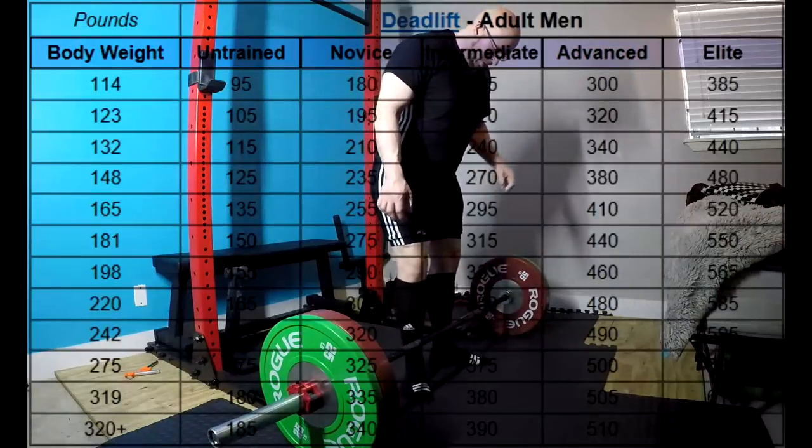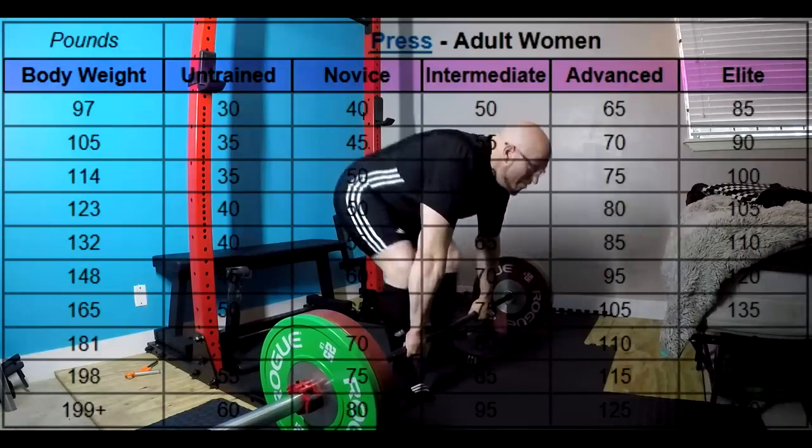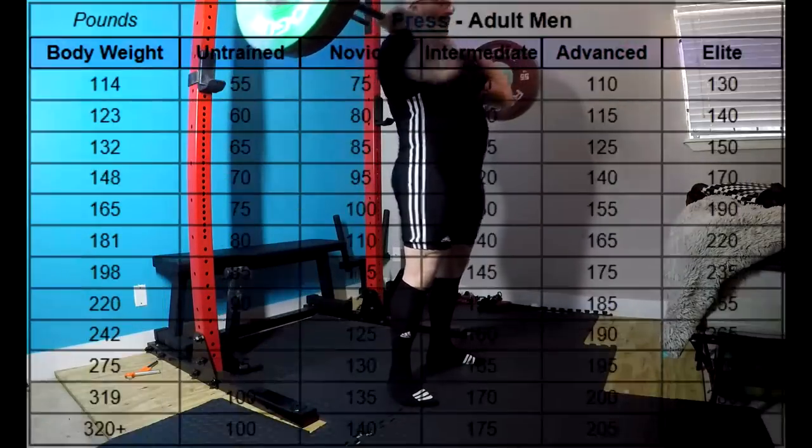Anyone who's been in the iron game a long time knows these ratios don't matter. Their relative strength is judged by charts. And these strength and conditioning coaches have put these charts together observing athletes for decades and decades. They're pretty good. They're not perfect, but they're pretty good.